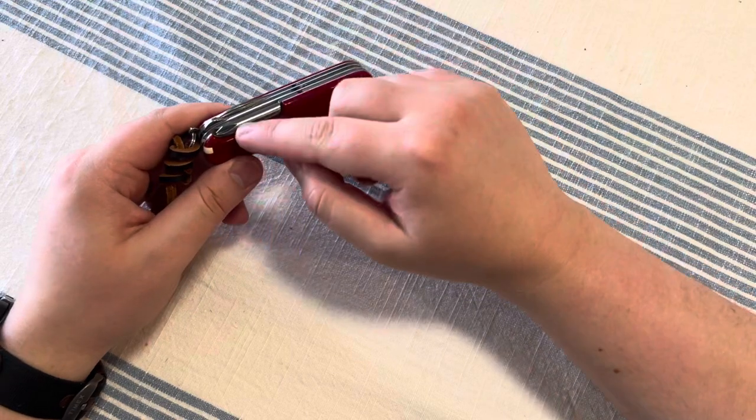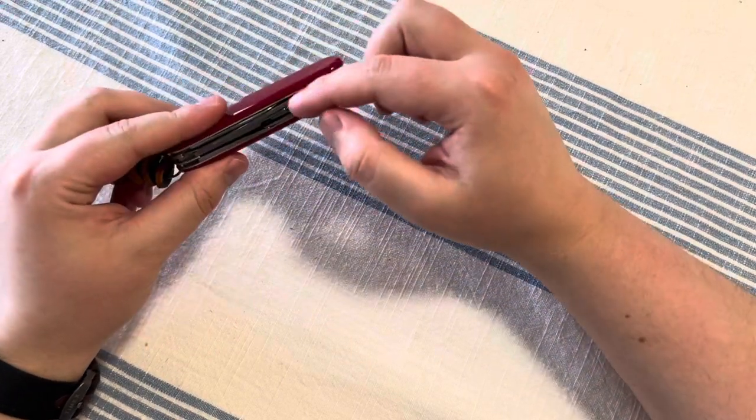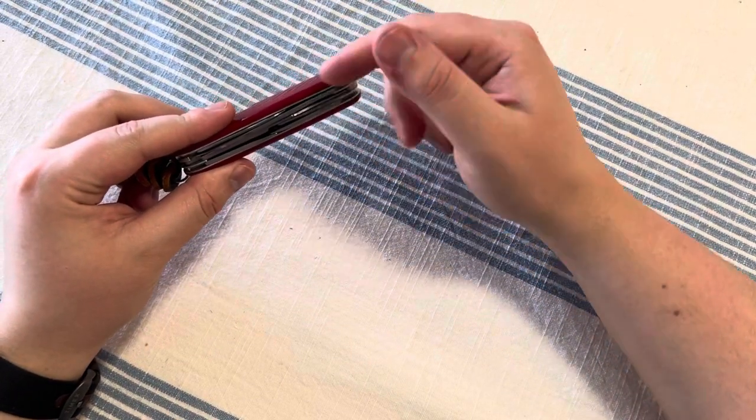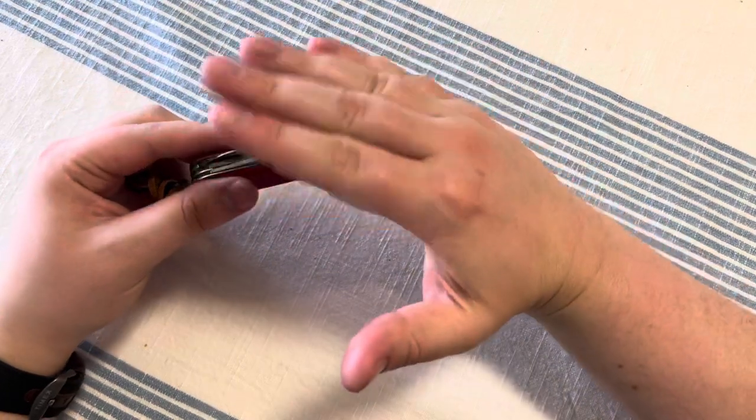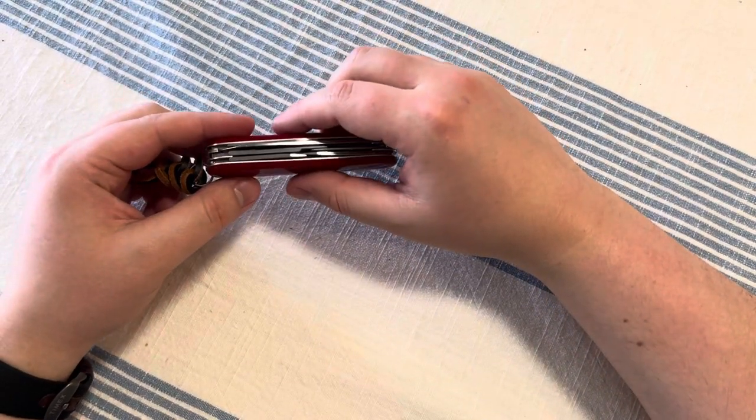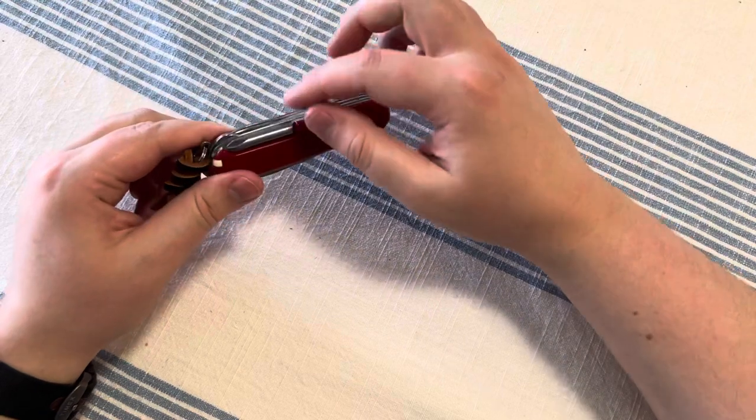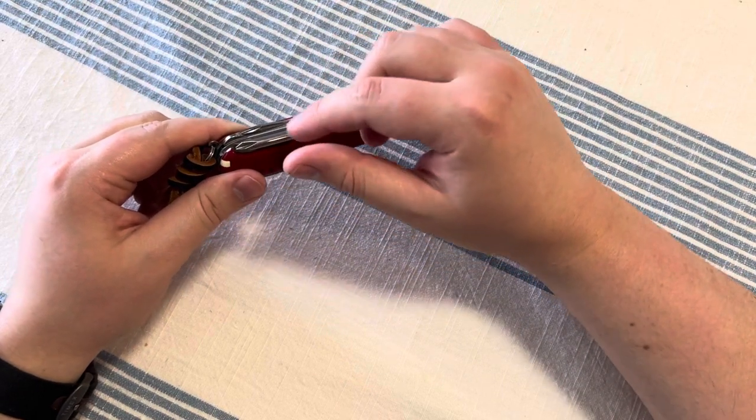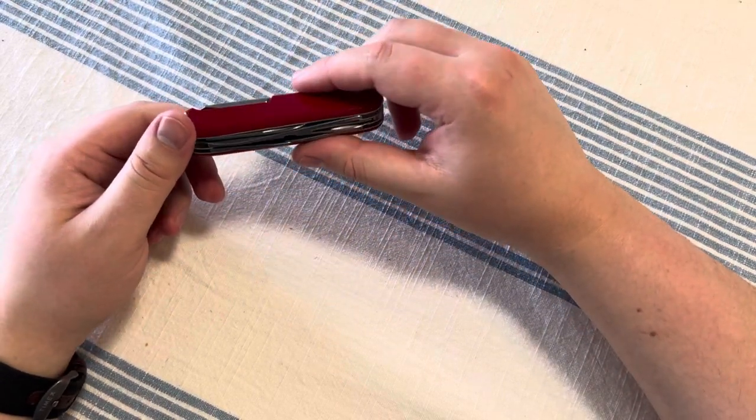And then instead of having this on the back, do one of the inline ones. So I guess you keep the thickness. Do one of the inline ones that fold out, like on the Huntsman. And then you could do the corkscrew with the eyeglass screwdriver. And I think that would actually be a really good combination.